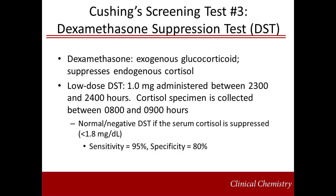Historically, some practitioners favor the high dose dexamethasone suppression test, in which a total of 4 or more milligrams of dexamethasone is administered over a 48-hour period, with several serum cortisol measurements made. However, the Endocrine Society recommendations state that this test is no more useful for diagnosis of Cushing's than the low-dose dexamethasone suppression test.